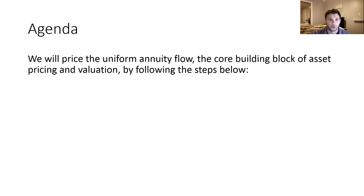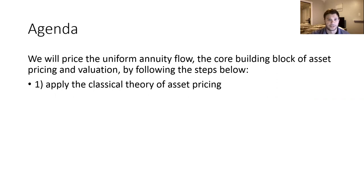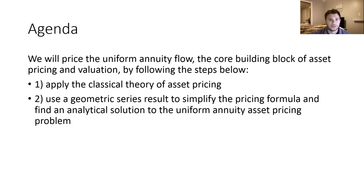We're going to take a look at one of those tweaks in the next segment when we consider what's called the growth annuity framework. But today, we're going to start by applying the classical theory of asset pricing. We're going to use a geometric series result to help us simplify the pricing formula and find an analytical solution to price this asset known as a uniform annuity.